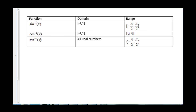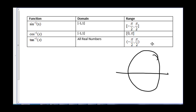We do have to restrict our domains and ranges, because on the unit circle there are multiple angles that can give us the same value. For inverse sine, we restrict the domain to negative 1 to 1, and the range is negative pi over 2 to pi over 2 — that is the right side of the unit circle.